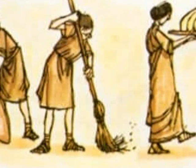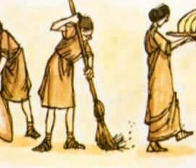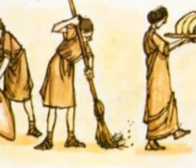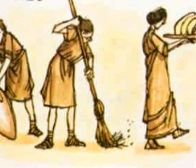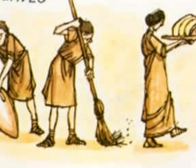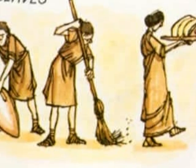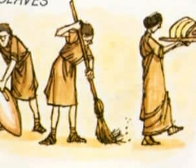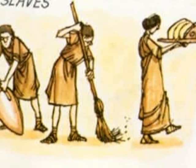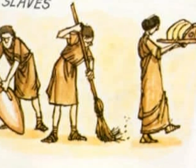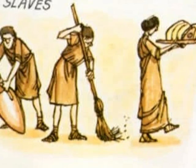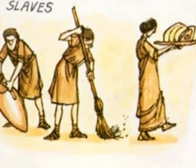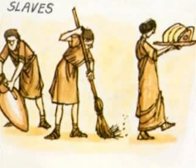Slaves were not considered citizens of Rome. They did, however, have some rights. But since they were not considered citizens, they were not allowed the customary three names of a Roman citizen — they had only one. Once a slave was set free, he or she would often take on the master's name as a second name and be considered a freedman or freedwoman.